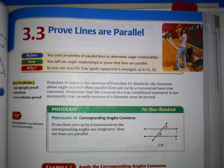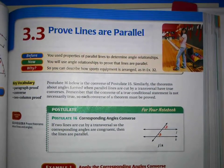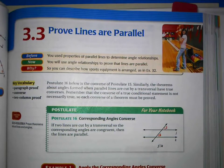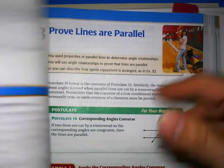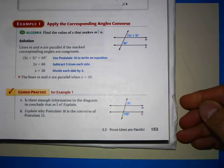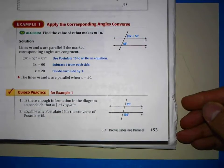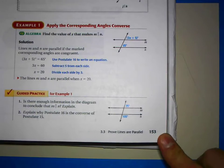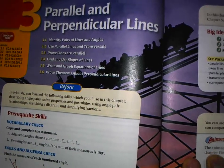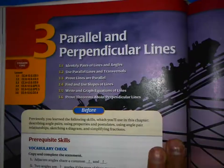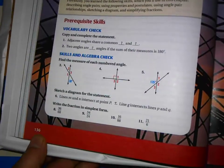Chapter 3, Section 3: Prove Lines Are Parallel. This is on page 153 in your book, so please make sure you have your book out and open as you follow along. Before we jump into Chapter 3, Section 3, flip back to page 136.